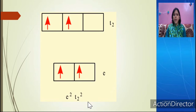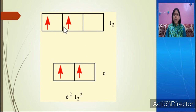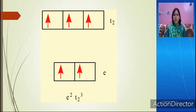This is the D4 configuration. The electrons fill 1, 2, 3, 4 so that the configuration becomes E2, T2(2) — two electrons in e and two electrons in t2. This is a high spin complex because the splitting is weak, making it a weak field complex.